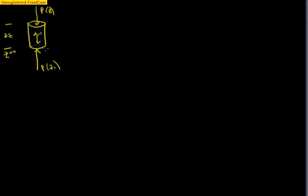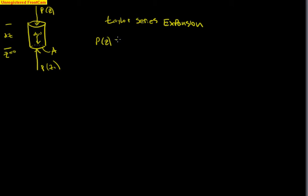We'll call the cross-sectional area of the cylinder A. Now with the picture complete, we use a Taylor series expansion to define the pressure at the top in terms of the pressure at the bottom: p(z) equals p(z-naught) plus dz times dp/dz. That is how we write the pressure at the top in terms of the pressure at the bottom.